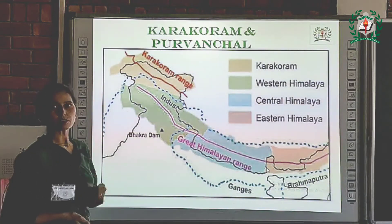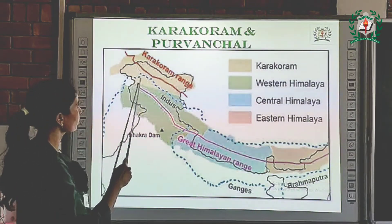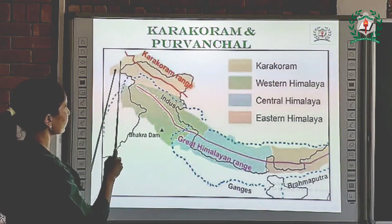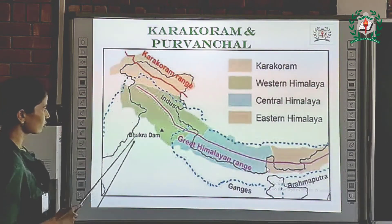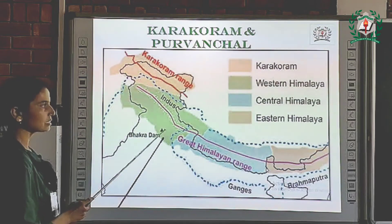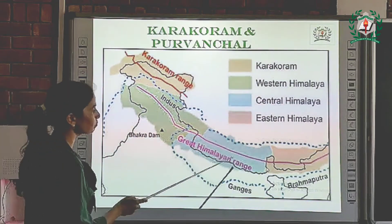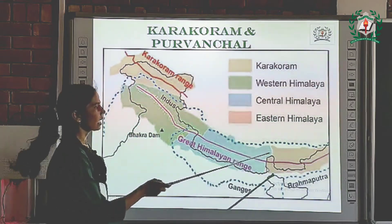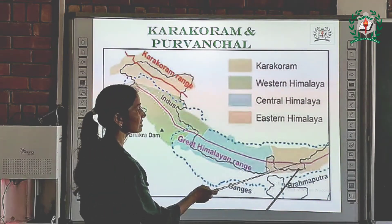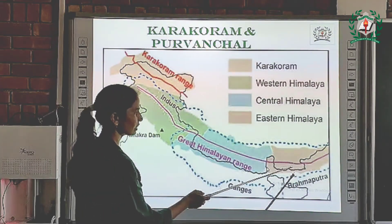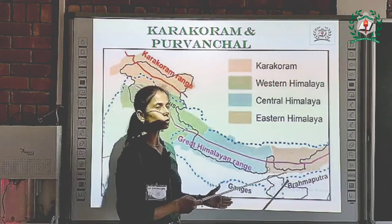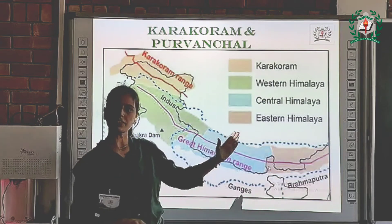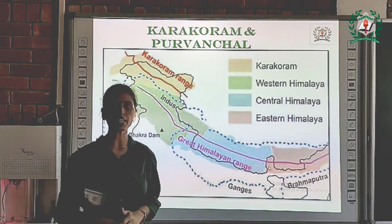Now we will discuss some more ranges, like the Karakoram range — you can see it here as the yellow range. This green range is known as the Western Himalayas. This blue range is known as the Greater Himalayas or Great Himalayan range. And this range is known as the Eastern Himalayas, also called Purvanchal — meaning the region towards the east.